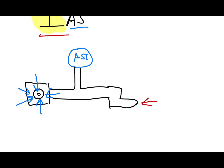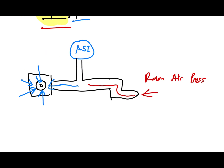You have your pitot tube, which is faced such that you get the RAM air pressure. This RAM air pressure is fed into the pitot tube, and the static port also feeds the static pressure. The airspeed indicator works by subtracting the RAM air pressure from the static pressure to get your dynamic pressure.